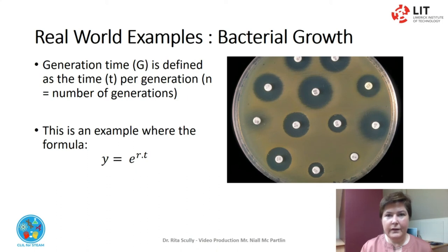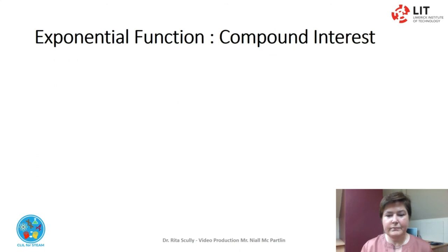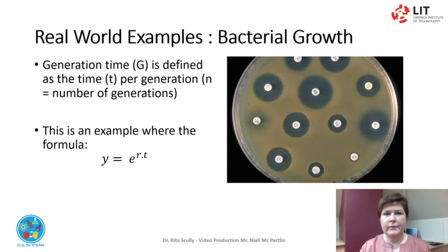y equals the exponential function to the power of r (rate) by t (time). If we start with one cell, when it divides there are two cells in the first generation, four in the second generation, and eight in the third generation, and so on. This generation time is the time interval required for cells or a population to divide.